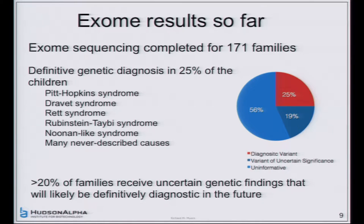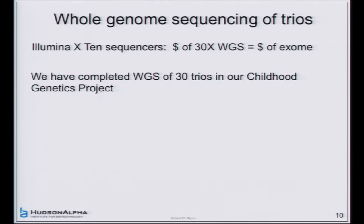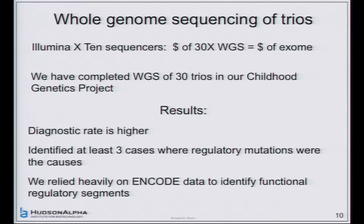We switched over to whole genome sequencing. We bought into the Illumina X10 system, which allows whole genome sequencing at 30x or greater. It's cheaper and faster, and it now costs us about the same to sequence a whole genome as an exome. We switched over to whole genomes once we finished 30 of these. The diagnostic rate goes up, maybe by 10%. A couple of other groups have also switched over to whole genome sequencing for these.